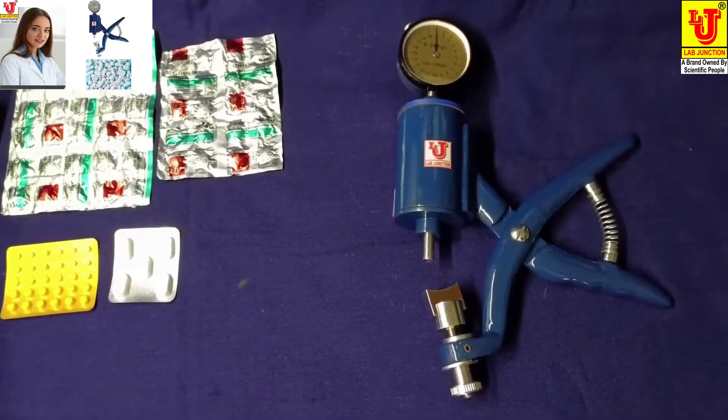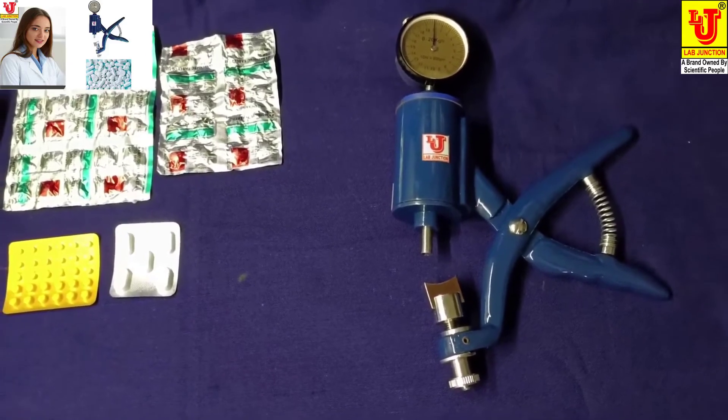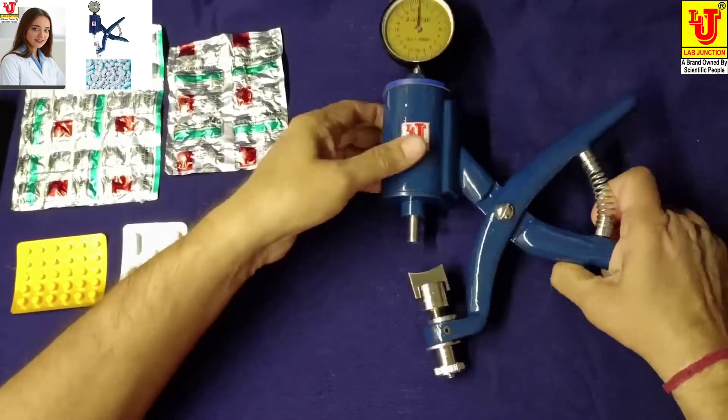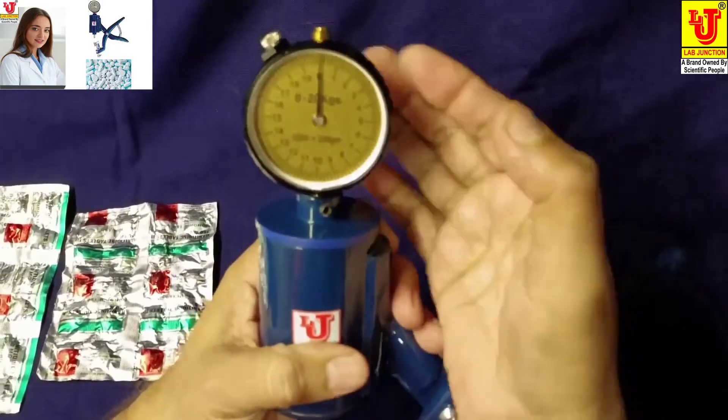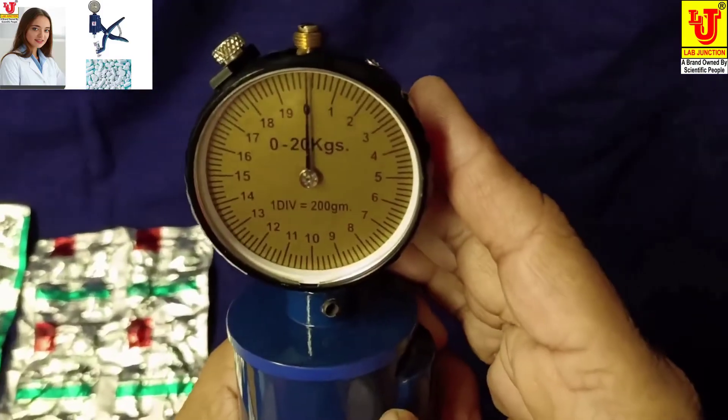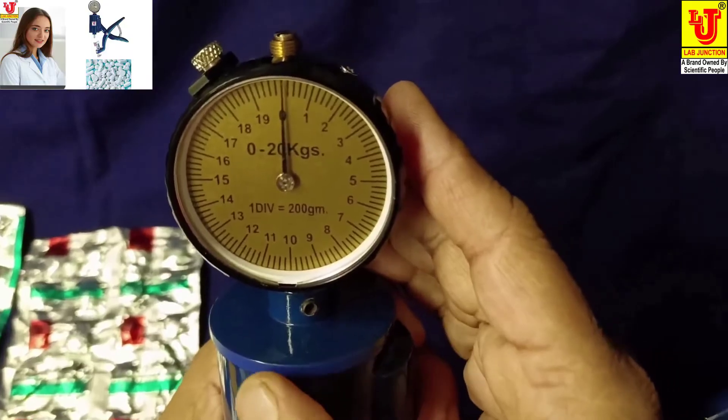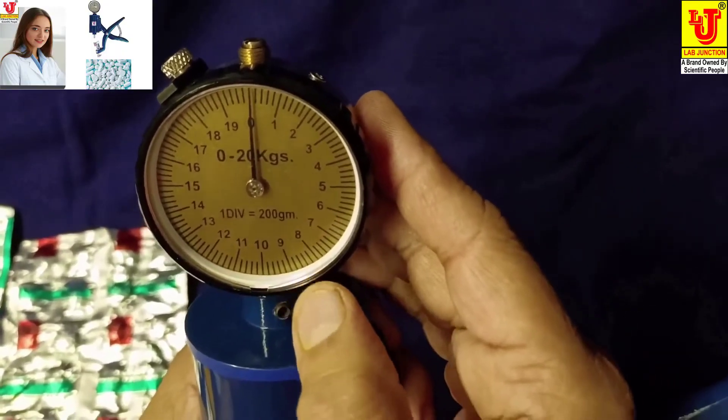The scale is adjustable for zero setting as per tablet size. This is the main scale, 0 to 20 kg. One division is equal to 200 grams.